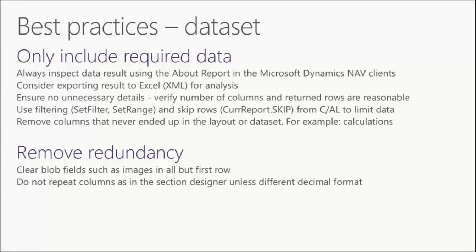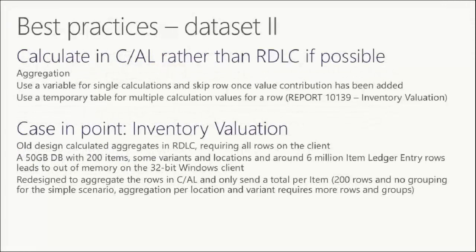We talked about this inventory evaluation report. The top approach is what we ended up doing to make it run much faster and to completion. We did all the calculations within CIL, created a temporary table, created a data item that basically spun through all the different entries, summed it all up, and at the end sent just the summations. So instead of having two or three million records, we ended up with 20 or 30.